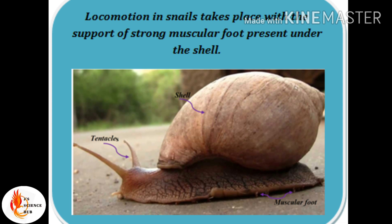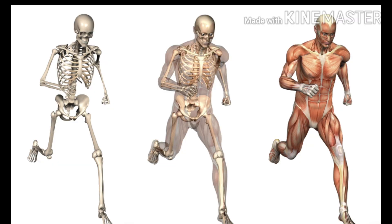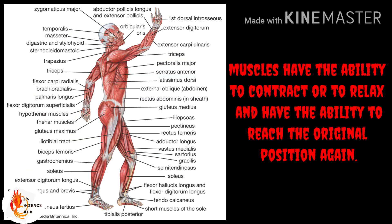Invertebrate animals like earthworm, leech, snail, and cobra do not have any special appendages for locomotion — they use their muscles for movement. But vertebrates use both muscles and bones for their movement. Bones and muscles not only help to maintain your body shape and rigidity but also help for movement.